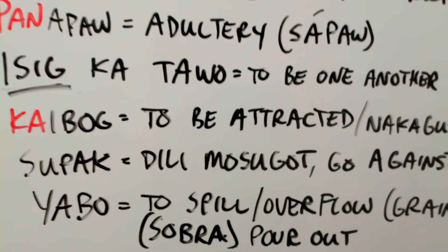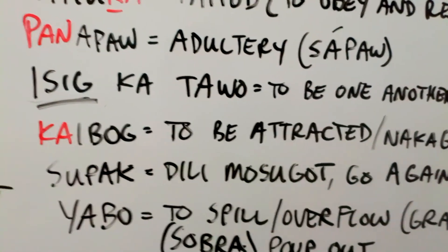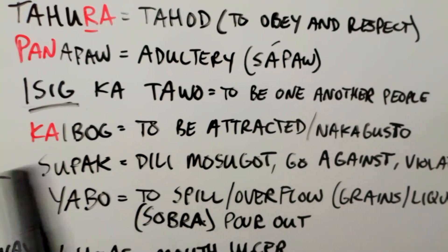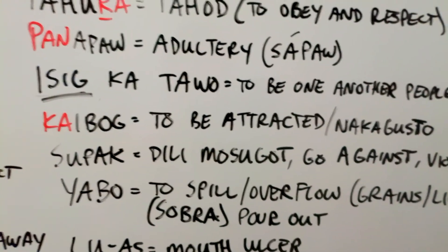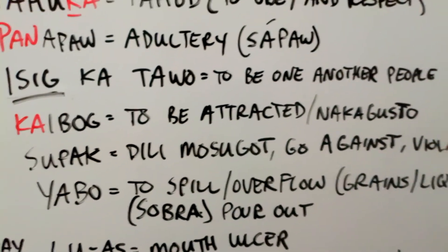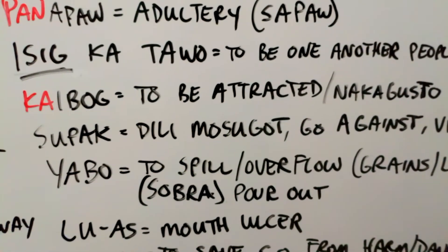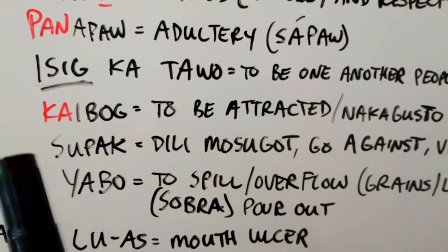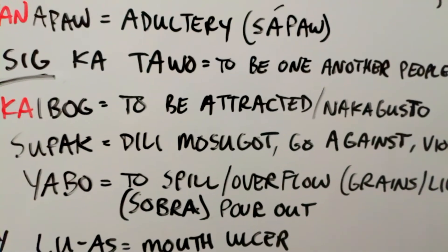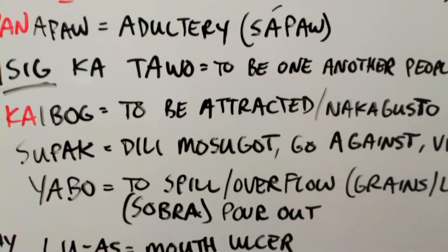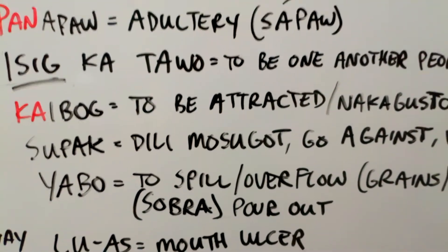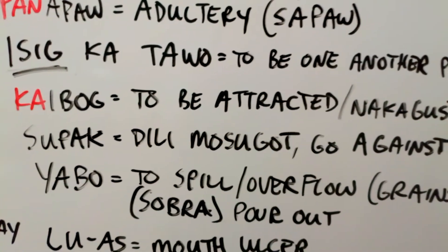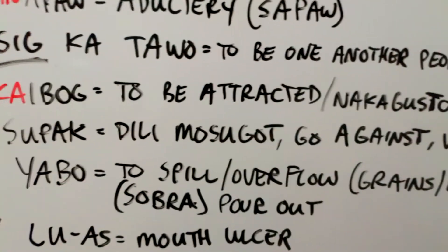Kaibog — root word here is ibog. It means to be attracted. Kaibog is just the indigenous way of saying nakagusto. Nakagusto is the borrowed Spanish way of saying kaibog or nakaibog — they are the same thing. Something that you're attracted to and that you want, or maybe you're craving a certain kind of food — something that you have a liking for. Kaibog, nakagusto.